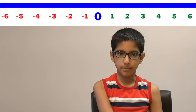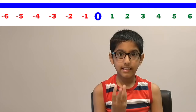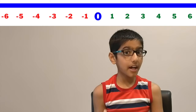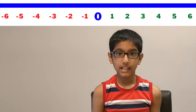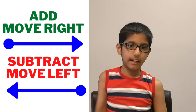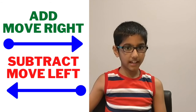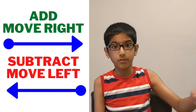Similarly, when you subtract two numbers, you move to the left side of the number line. Like when you subtract three from five, you move to the left and your answer is two. So, when you add two numbers you move to the right of the number line, and when you subtract two numbers you move to the left.